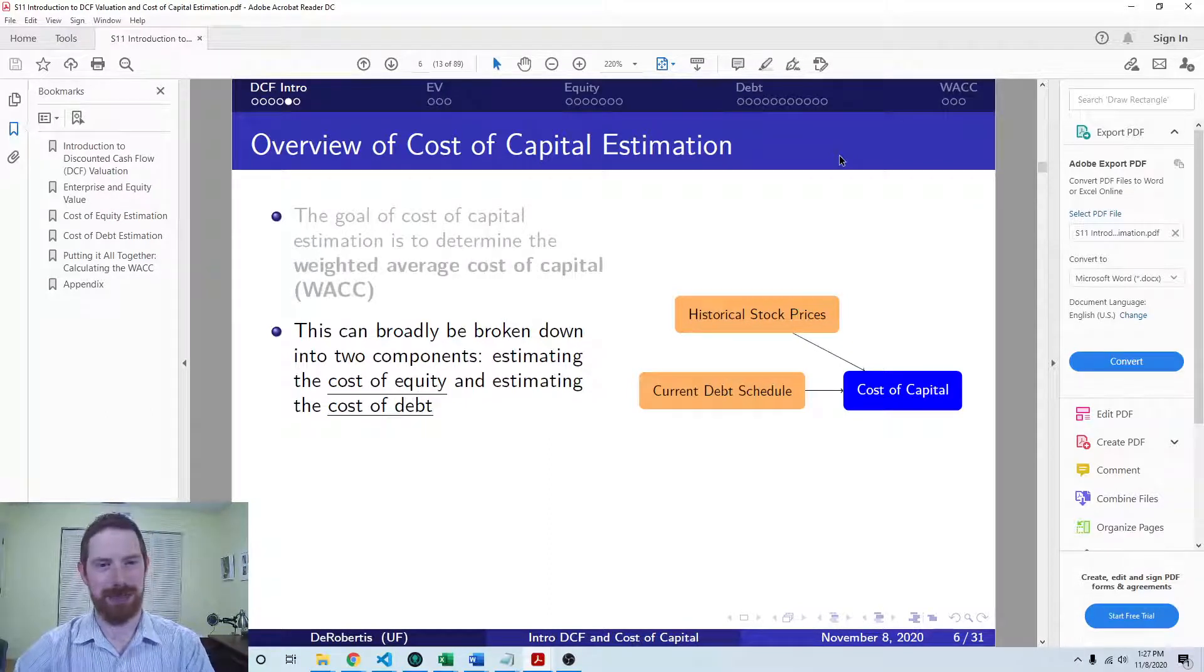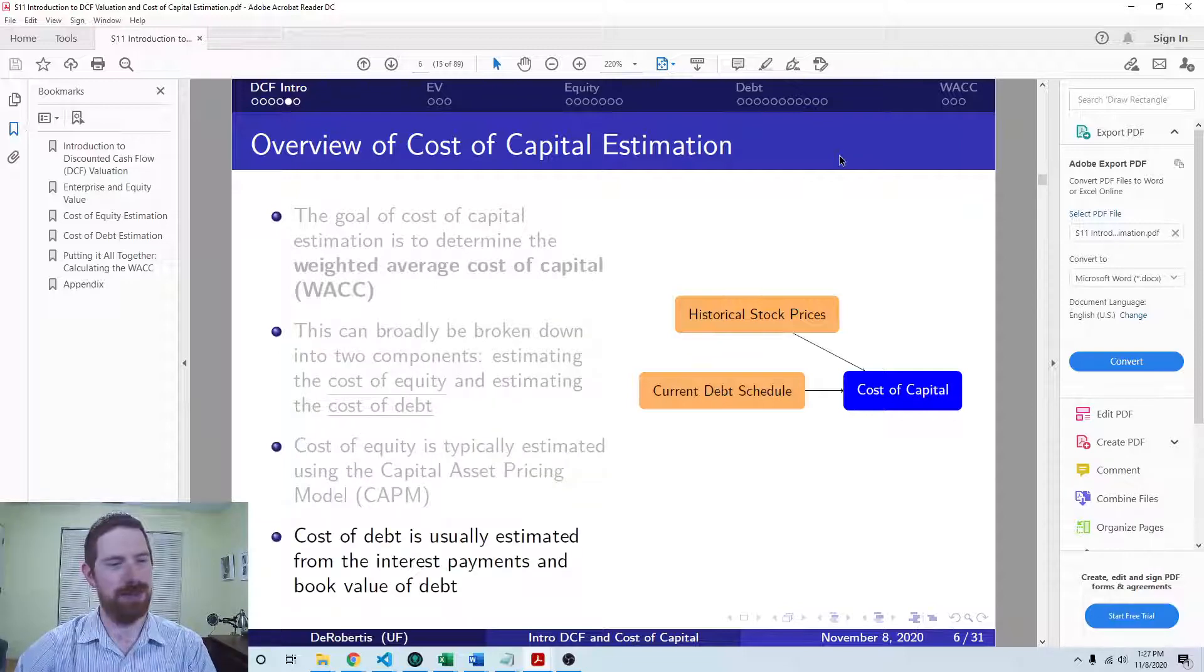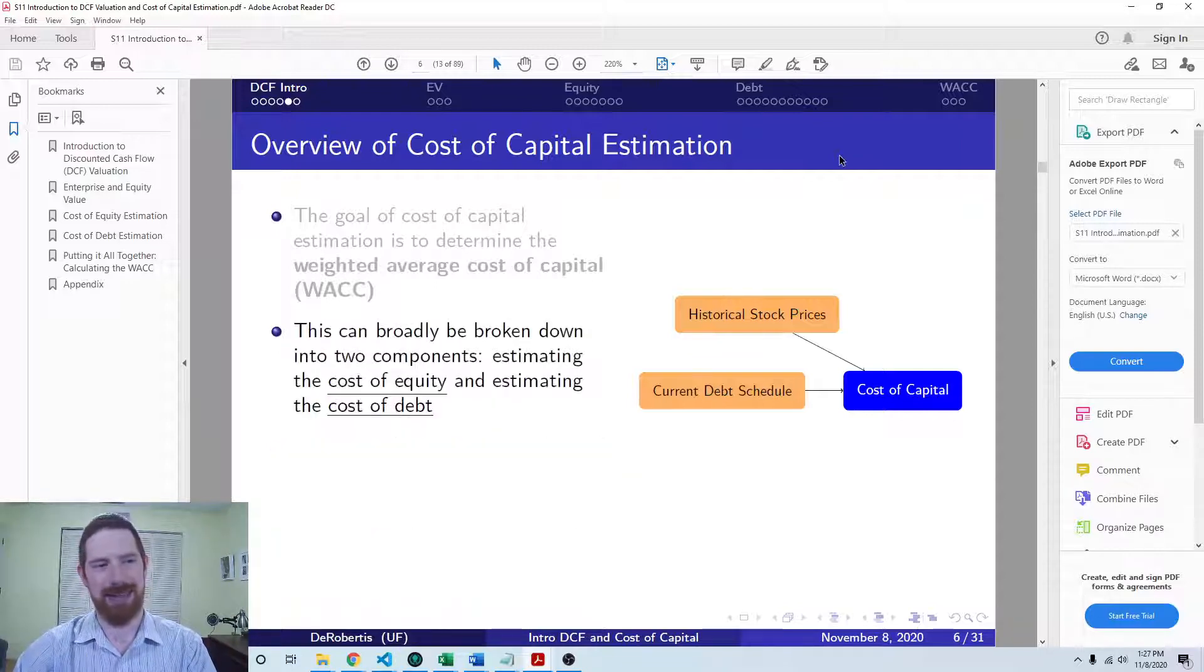We're just going to focus on the equity and the debt. So we're gonna have to figure out the costs of each of those, as well as the market value of each of those to be able to put them together into the WACC.